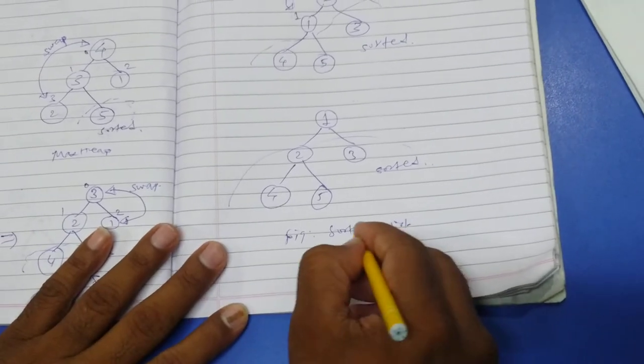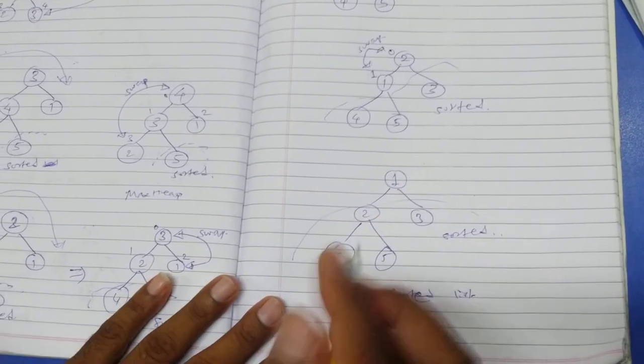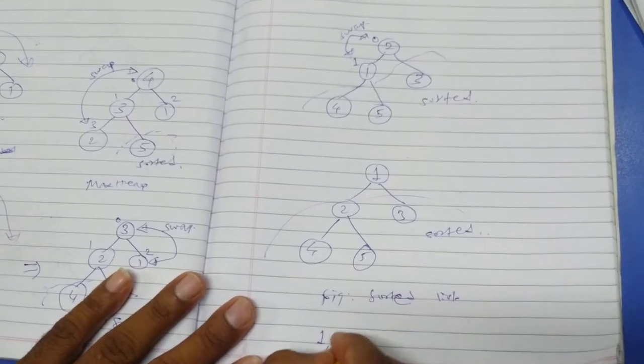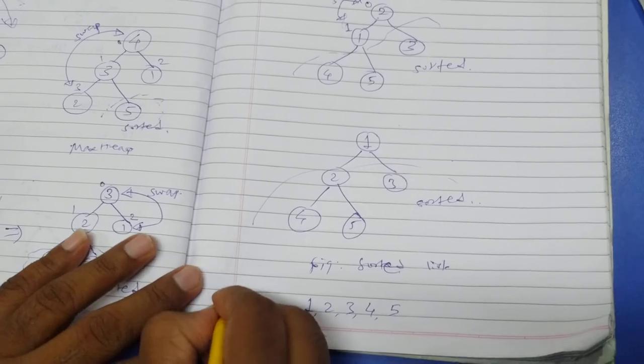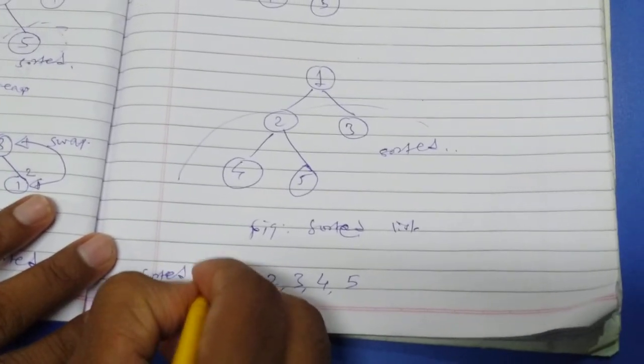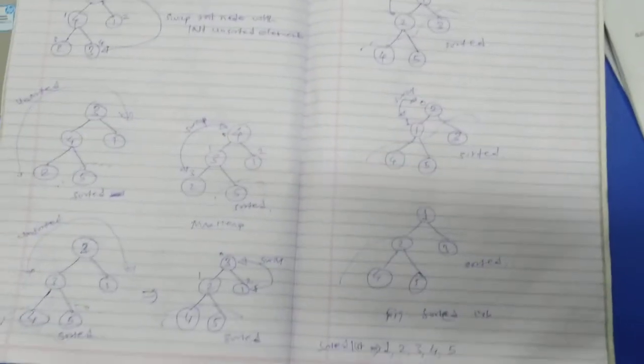To write the sorted list, we have to traverse the tree from root to the last node level-wise. Okay. So this is heap sort.